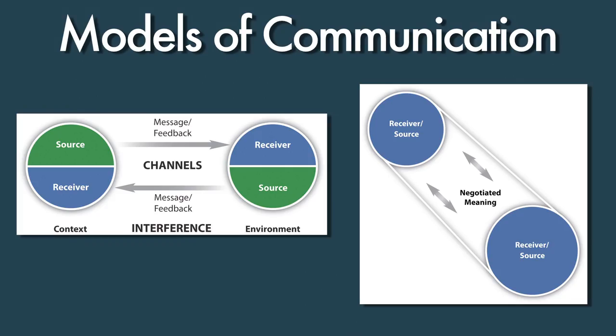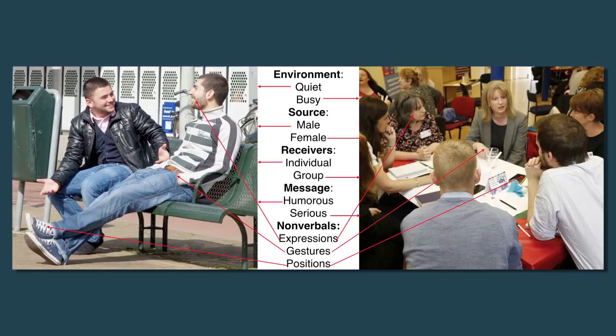Another point made in this section is that theories and models can help communicators identify elements of the communication process that will help them prepare for different communication situations. For example, these images show two very different communication situations, and you can see how the elements and models can be accounted for and how they differ.